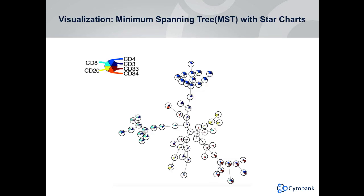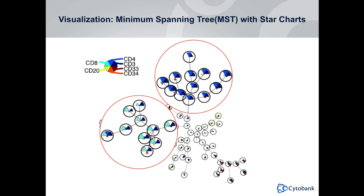The star charts with the minimum spanning tree are shown in more detail here. Each circle is a cluster. Clusters that are close to each other are more similar than clusters that are far apart. Within the cluster, the star charts show the marker expression — the height of each marker shows the expression level. A marker that reaches all the way to the top has high expression. This allows multiple parameter visualization in the same plot, so more information can be shown in a single plot, giving an overview of all markers on all cells.